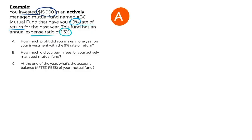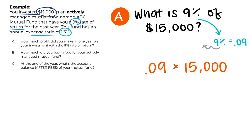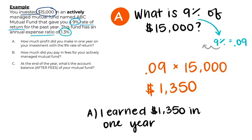First, we are asked how much profit we made in one year with a 9% rate of return. Let's calculate 9% of our investment of $15,000. 9% written as a decimal is .09, then I can punch this into the calculator to get $1,350. This means we earned $1,350 in the past year.